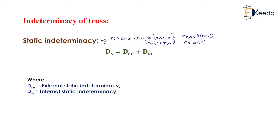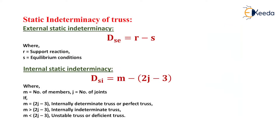The formula for static indeterminacy equals the sum of external static indeterminacy and internal static indeterminacy. For the calculation of external static indeterminacy, the formula remains the same as that of beams and frames: R minus S, where R is the support reaction and S is the equilibrium condition.